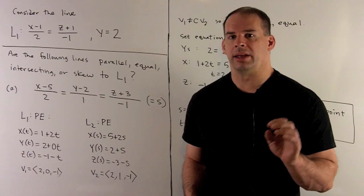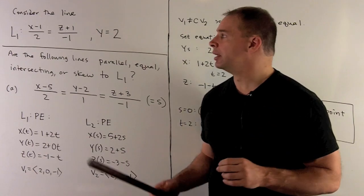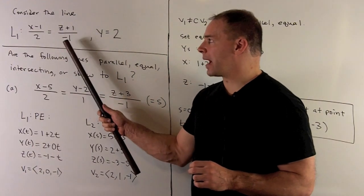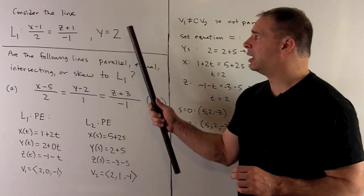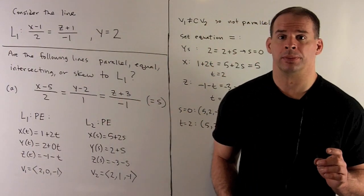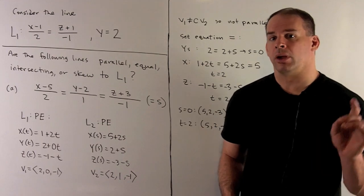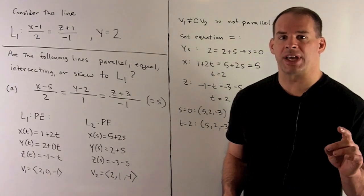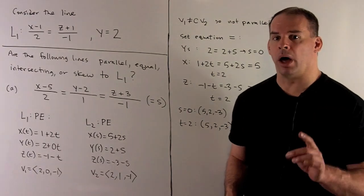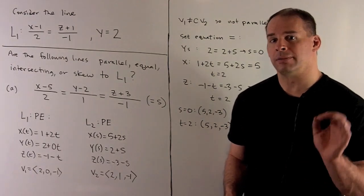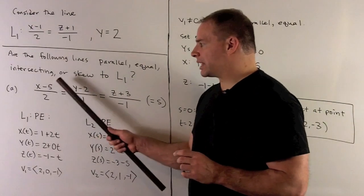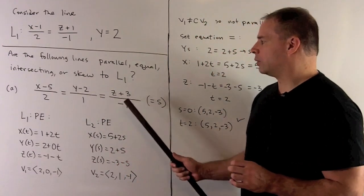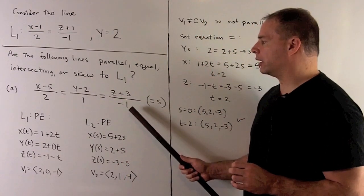Consider line L1 given by the symmetric equations: (x minus 1) over 2 equals (z plus 1) over minus 1, and y equals 2. We want to know if the following lines are parallel, equal, intersecting, or skew to L1. The first line is given by (x minus 5) over 2 equals (y minus 2) over 1 equals (z plus 3) over minus 1.